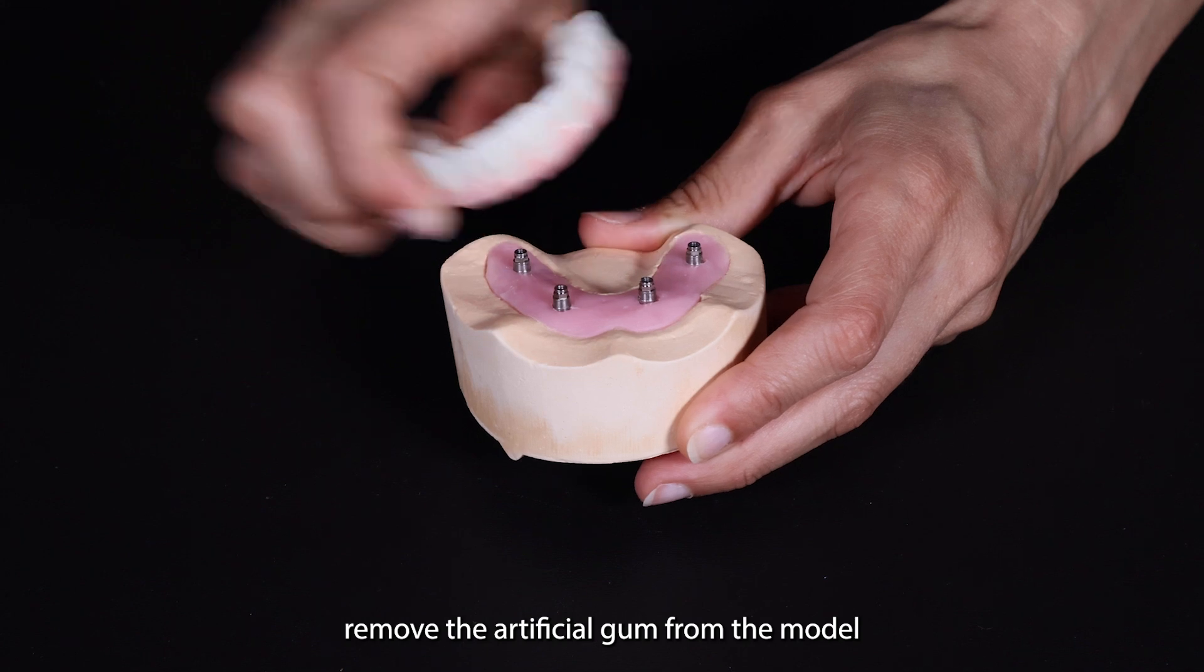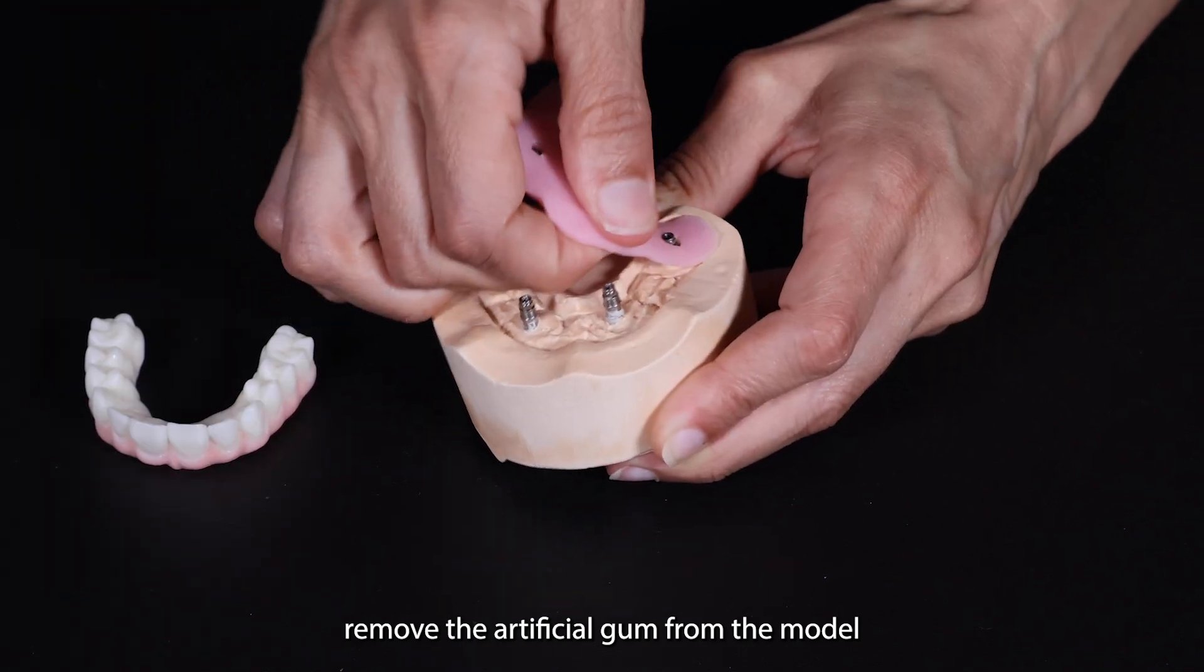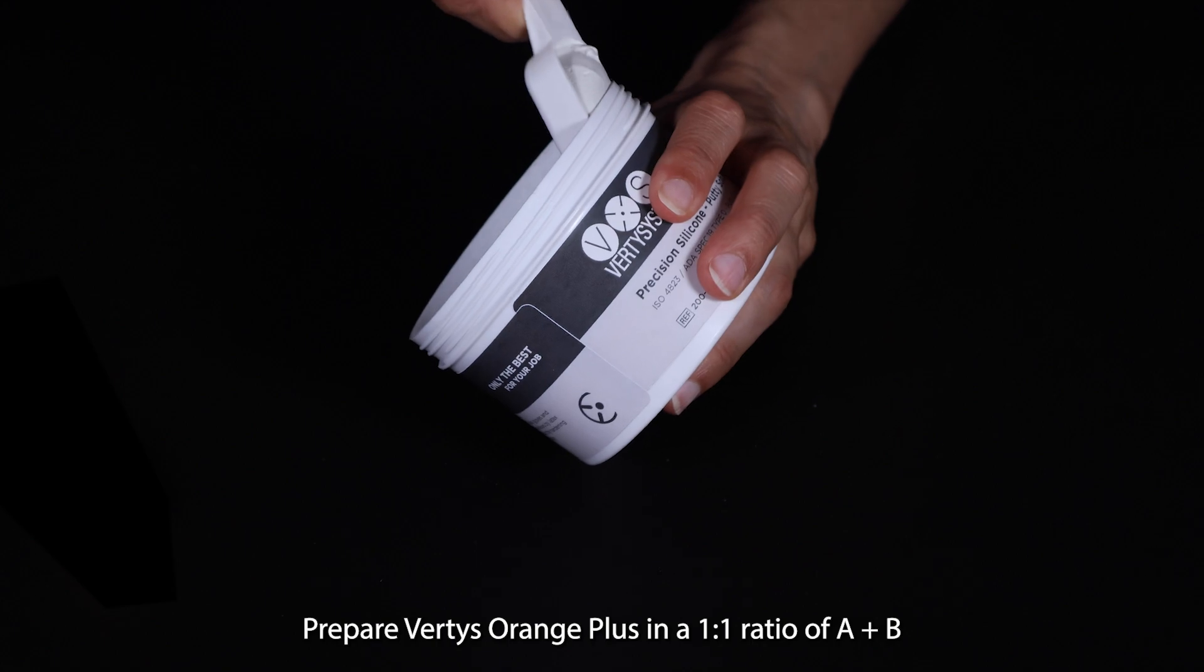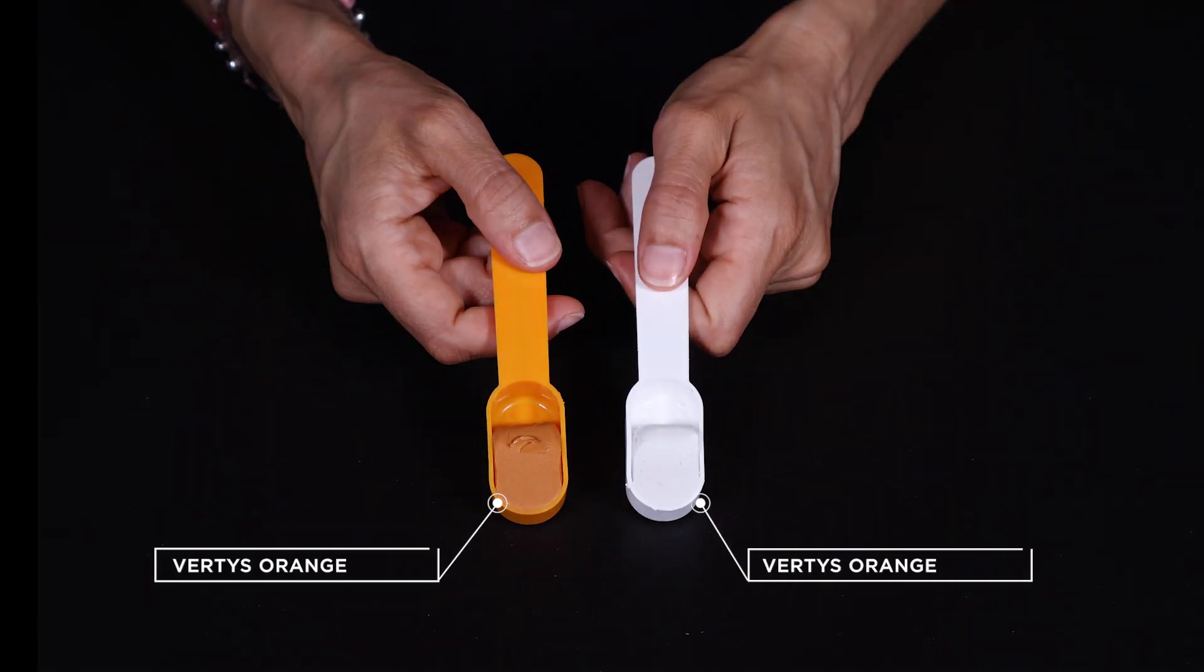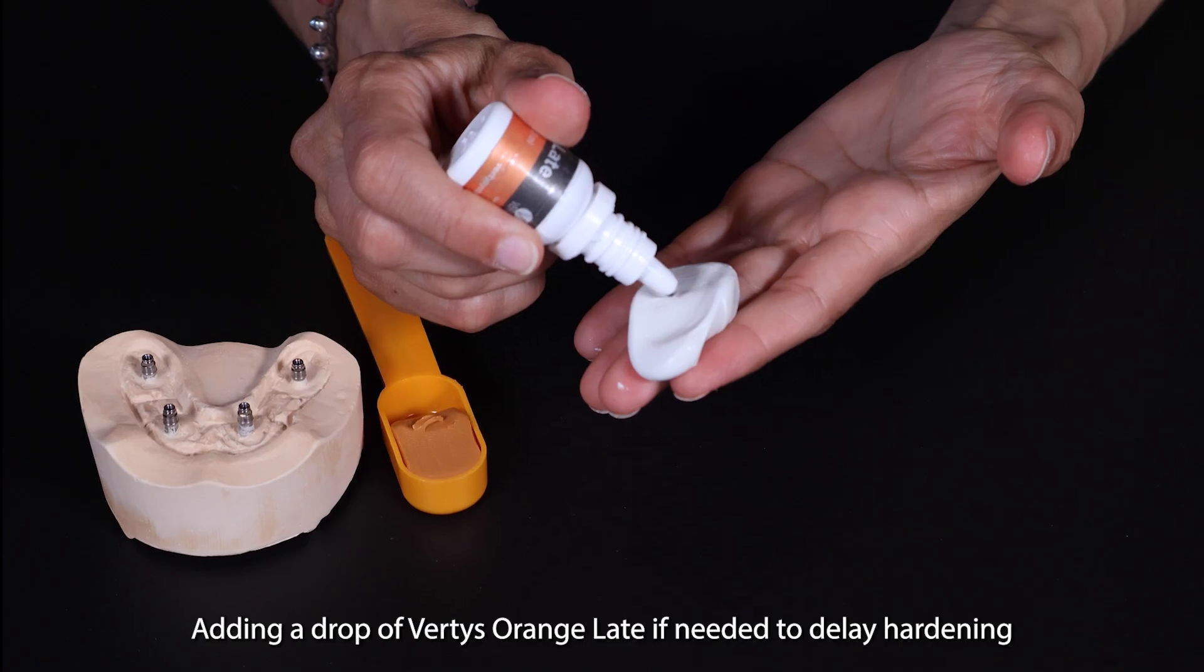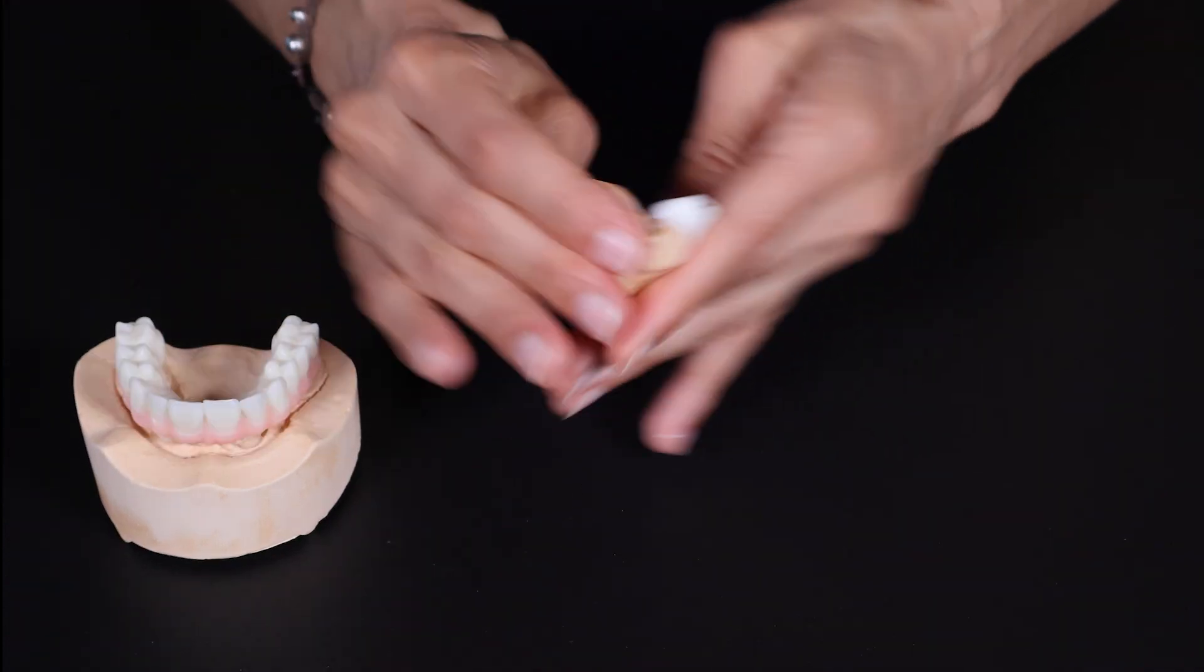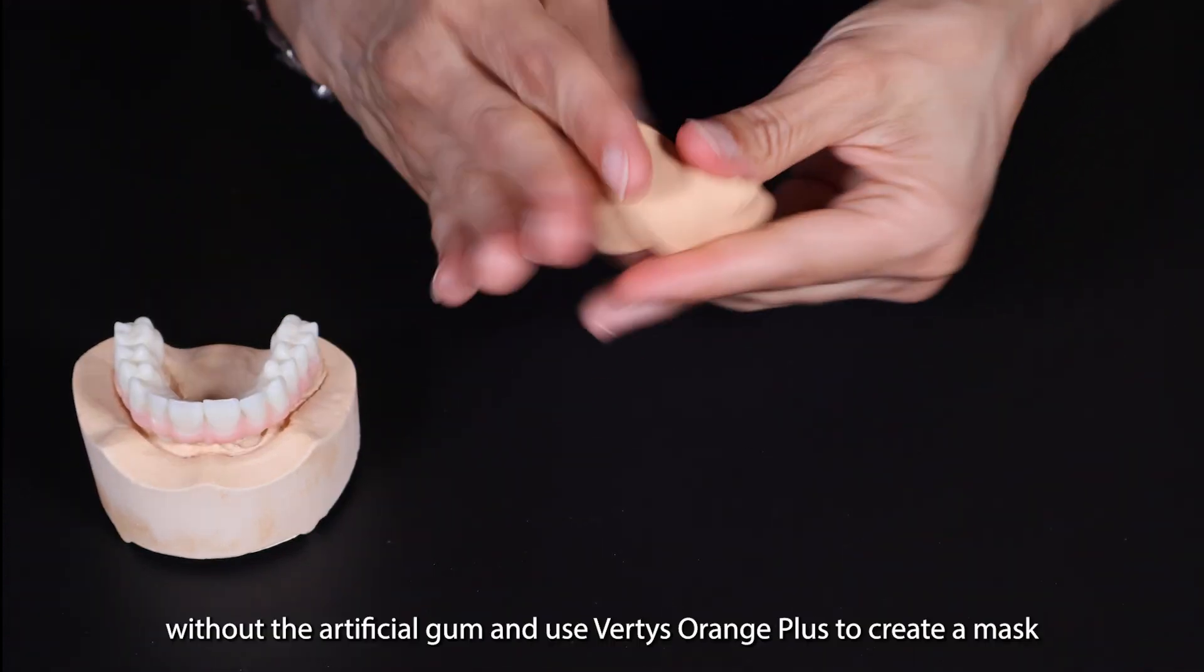To begin, remove the artificial gum from the model. Prepare Vertis Orange Plus in a 1:1 ratio of A plus B, adding a drop of Vertis Orange Late if needed to delay hardening. Take the 3D printed project without the artificial gum.